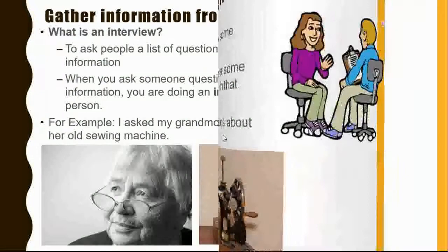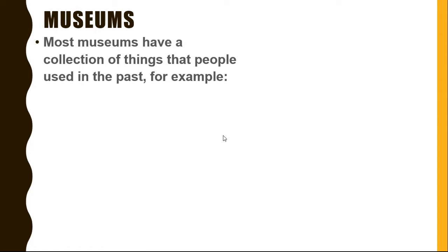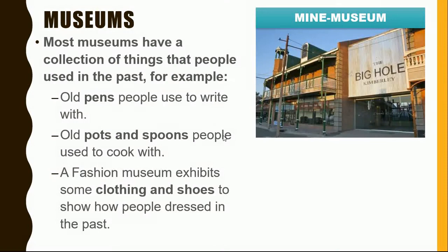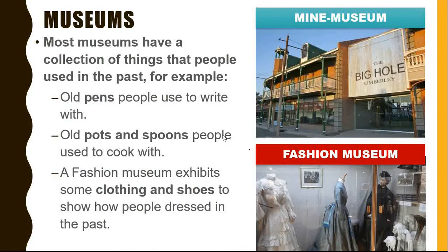Museums. Most museums have a collection of things that people used in the past. For example, old pens people used to write with, old pots and spoons that people used to cook with. A fashion museum exhibits some clothing and shoes to show how people dressed in the past. Here is an example of a mine museum in Kimberley, as well as a fashion museum.